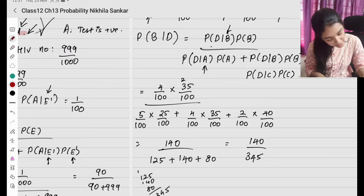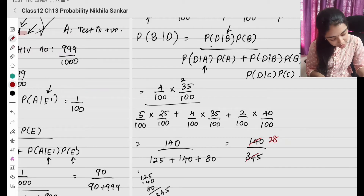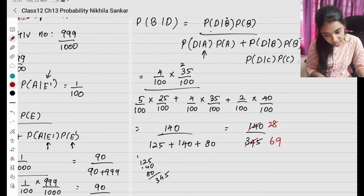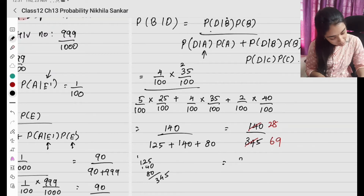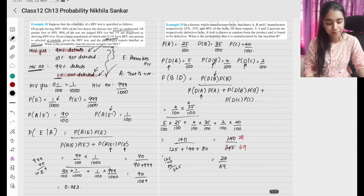Simplifying further: 140 divided by 345 gives 28 divided by 69. Please copy.